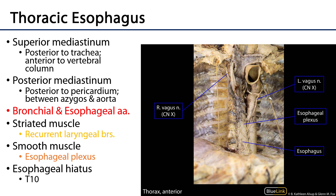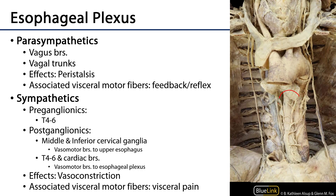The esophagus is then going to be conveyed through the esophageal hiatus of the diaphragm at approximately the T10 level, where we'll pick it up as the abdominal part of the esophagus. But first let's discuss this esophageal plexus.